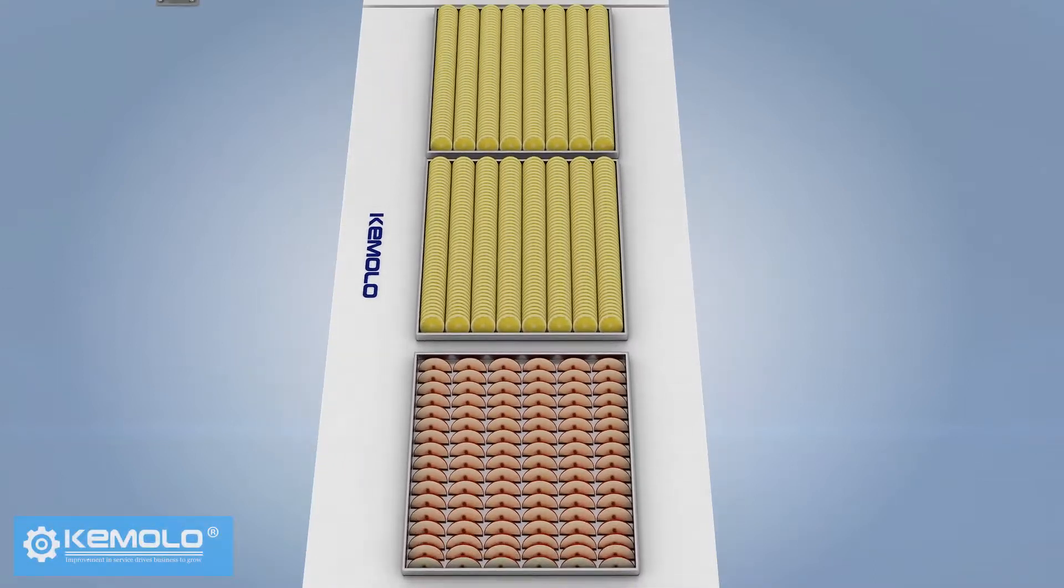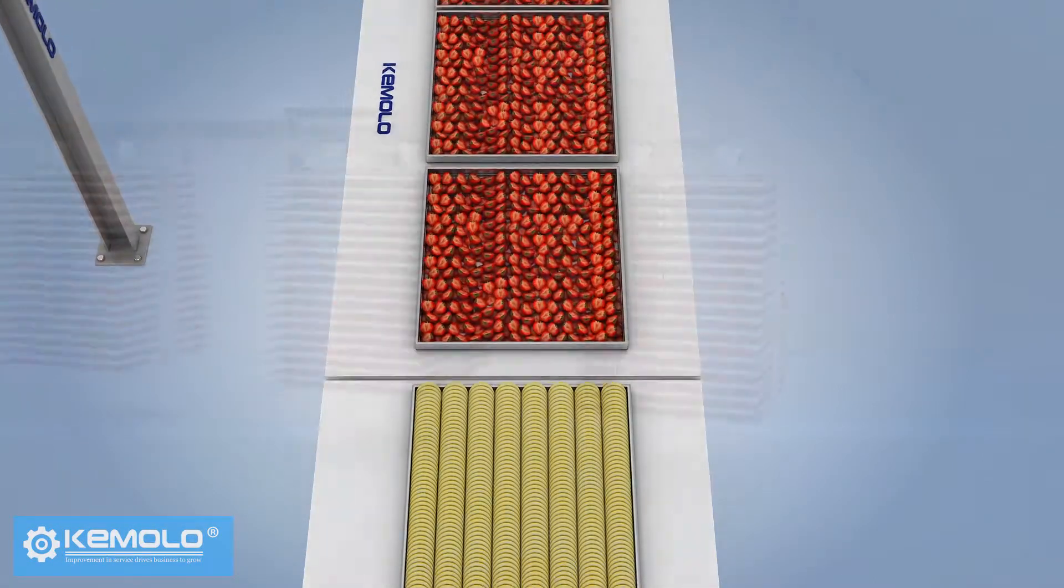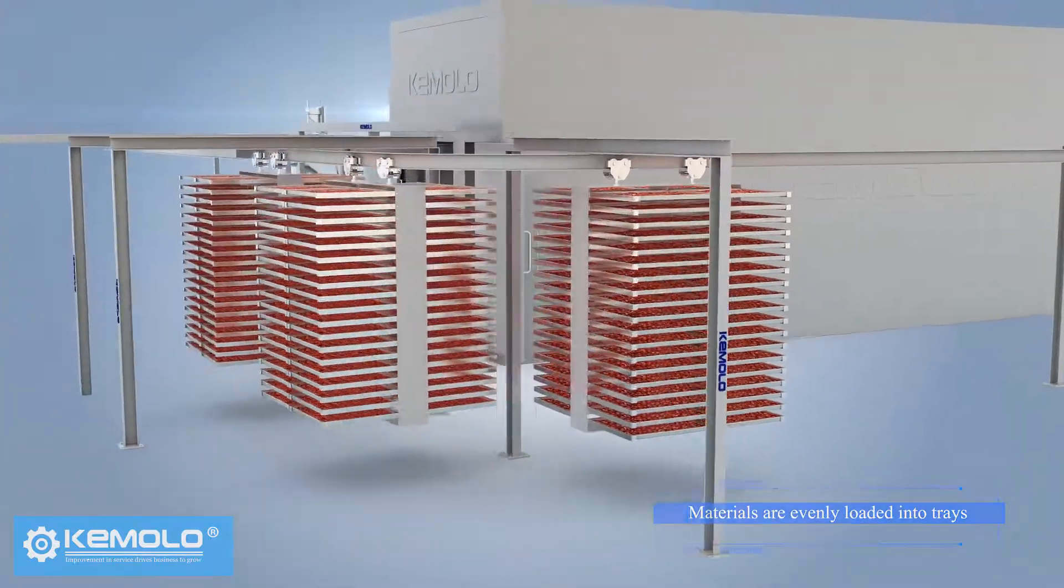First, wash and slice the fruits, vegetables or other pre-processed materials evenly and load them into product trays.